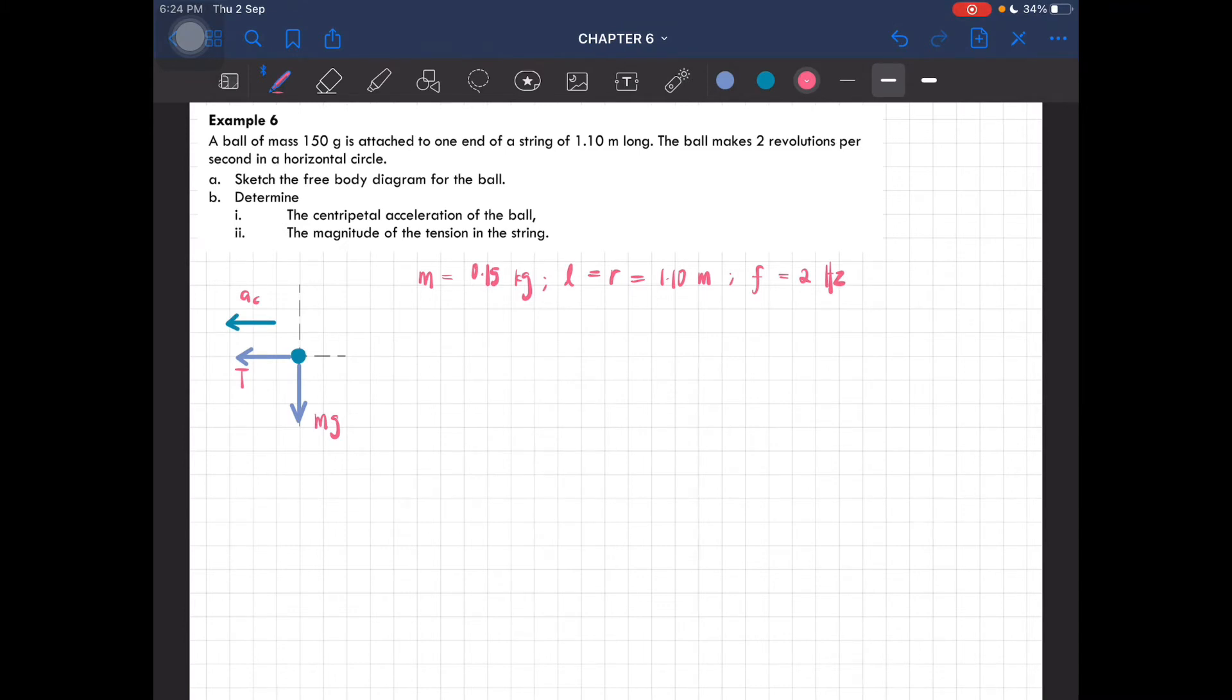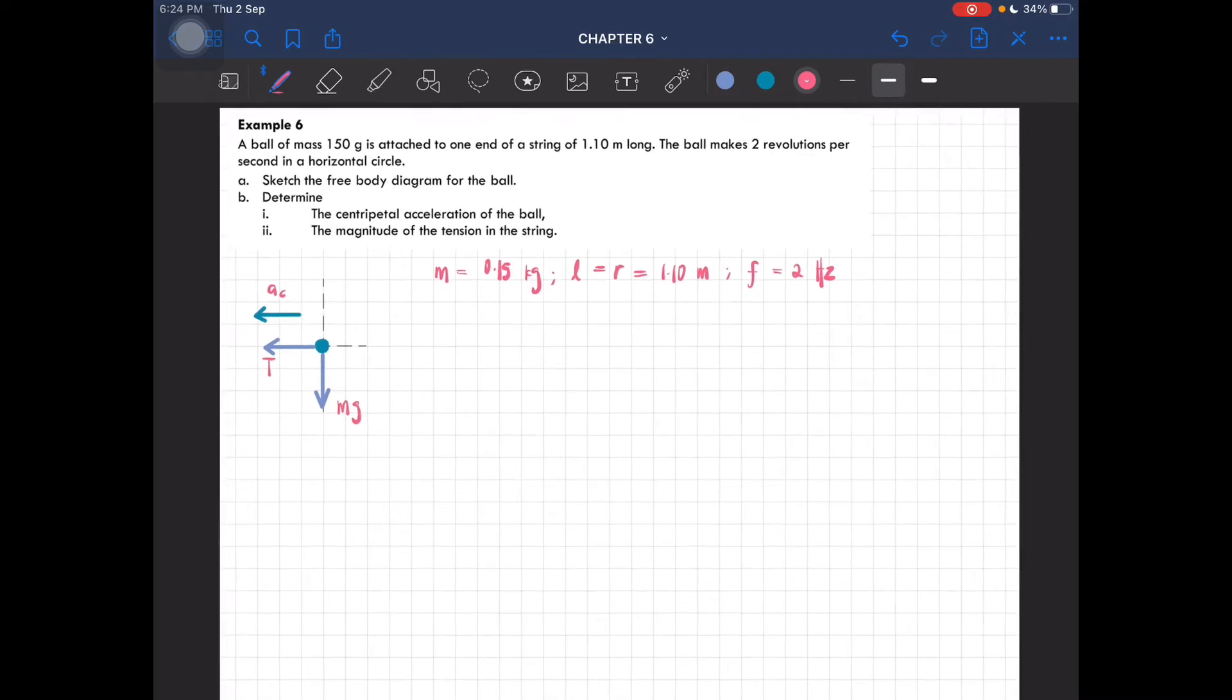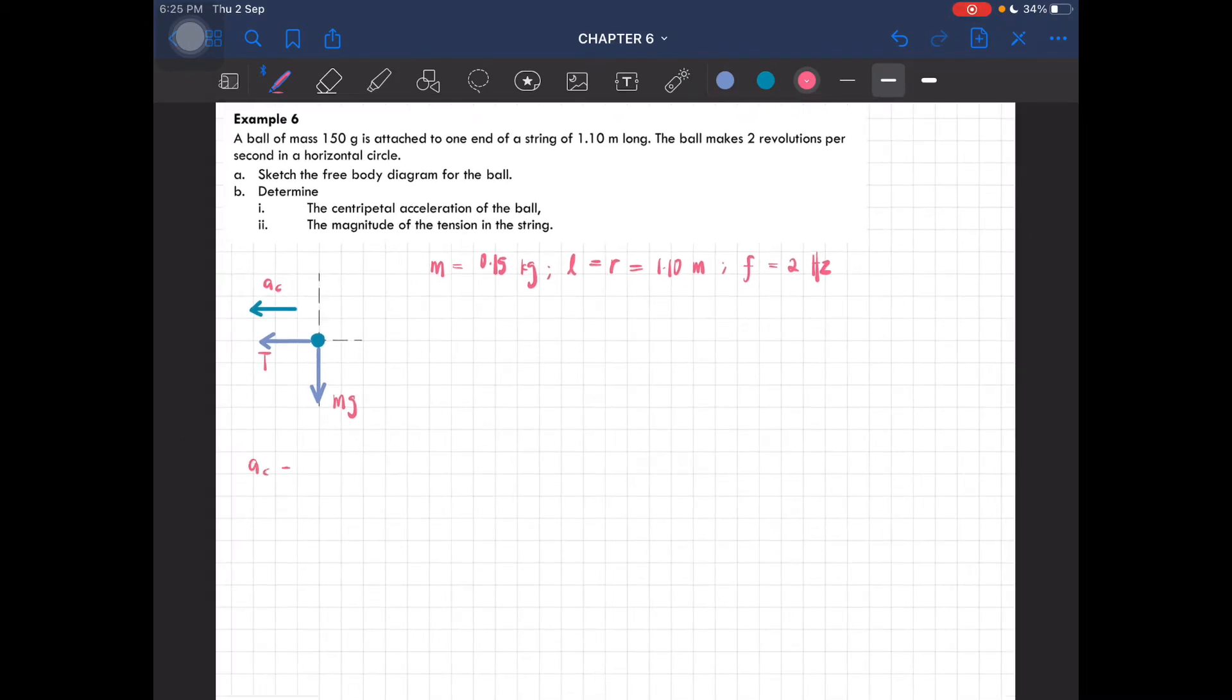So we have finished drawing the free body diagram. Now we have to find the centripetal acceleration of the ball. We know that centripetal acceleration is given as v squared over r. Now we have the value of the radius; however, we do not have the value of v.